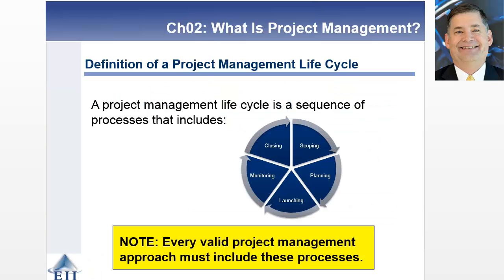Each project management lifecycle is going to be a sequence of processes that include these phases: scoping, planning, launching, monitoring, and then closing. Every project management approach — all 12 that we look at — has these five phases. One of them only goes through each process once. For many of them, it will be iterative — you'll do it over and over again, depending on the project and as you learn more.